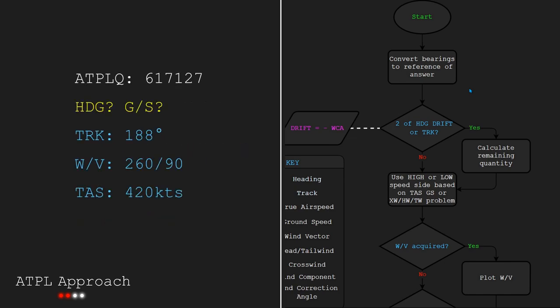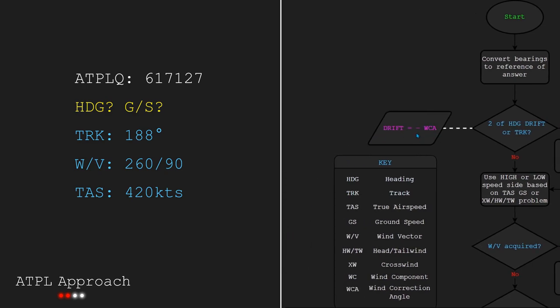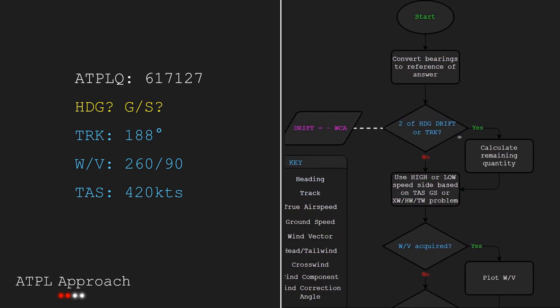Right, now after that ramble we now come to this decision block which asks if we have two of the heading, drift or track. We also have this statement here saying that drift is the negative of the wind correction angle. So if we had a drift of 6 degrees right, our wind correction angle will be negative 6 degrees right, which is 6 degrees left. The idea behind it is that you need to have a heading which corrects for the wind in order to fly where you want to go.